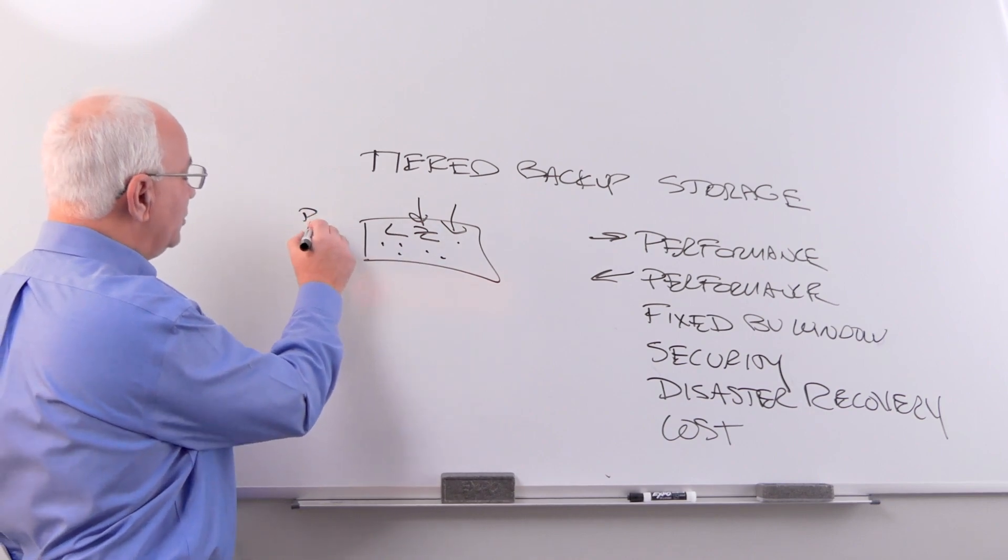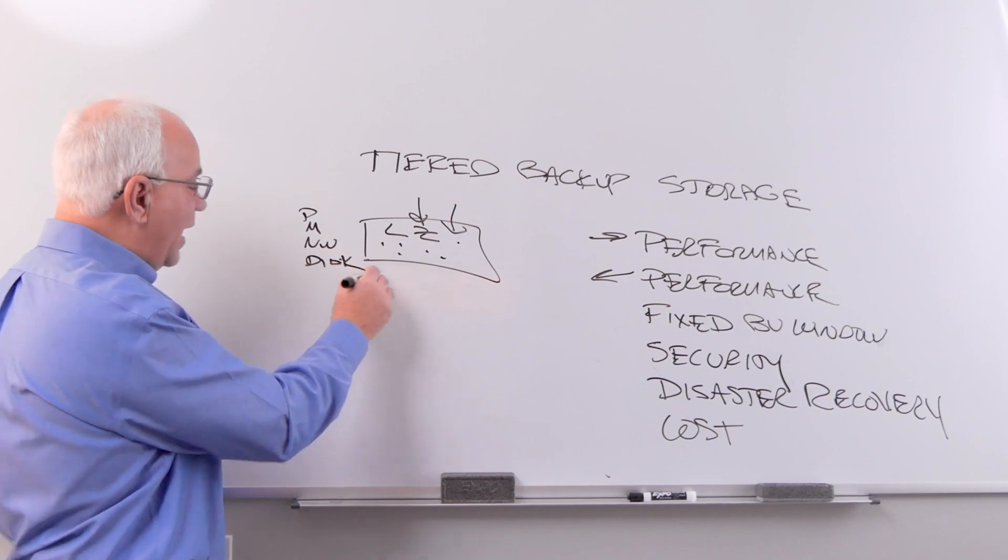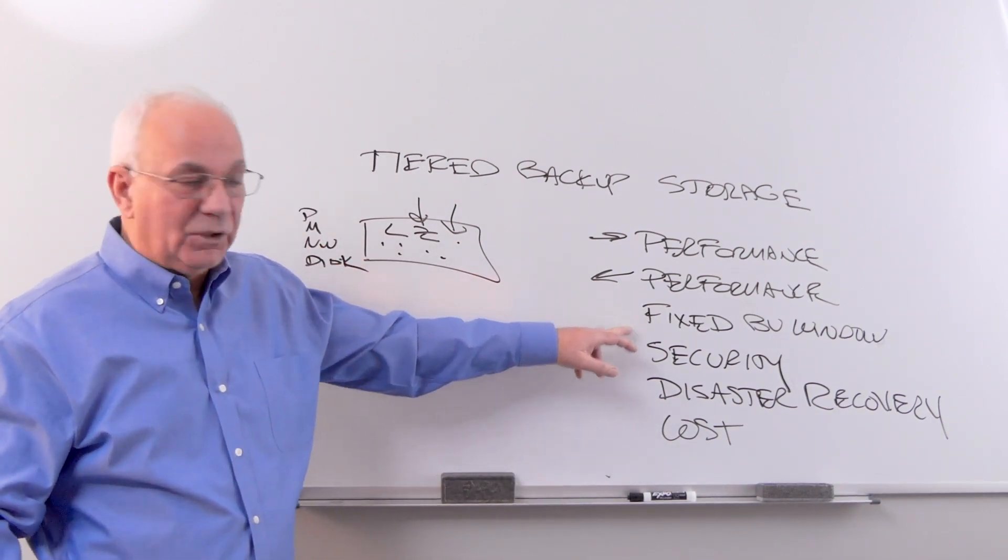Every appliance has processor, memory, networking, and disk capacity so that all the resources scale as the data grows to keep a fixed length backup window.